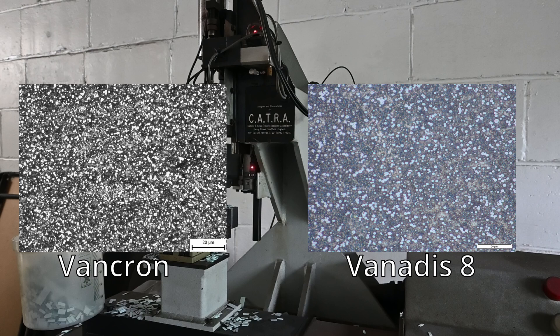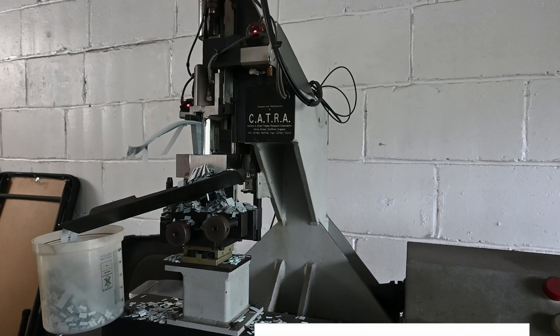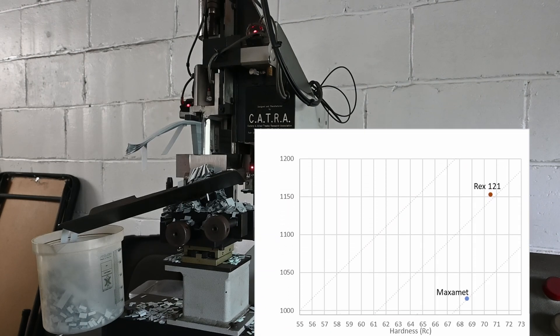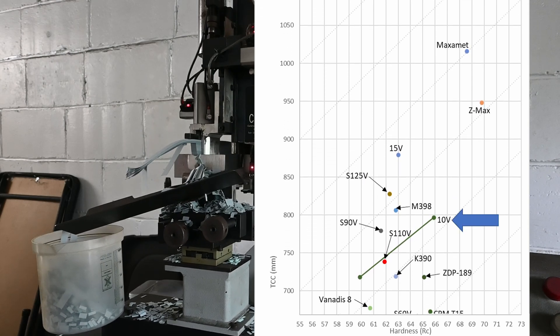Carbonitrides coarsen more slowly than vanadium carbides, which gives VANCRON a finer microstructure than Vanax-8 or CPM-10V. And with that high vanadium, I expected VANCRON to perform similarly to other vanadium steels. But instead, it tested much lower.